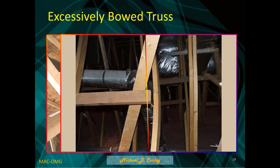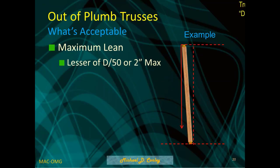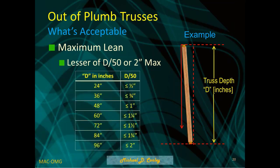Maximum lean is another concern. Trusses lean on occasion because the straps were put in improperly or in an improper location. The rule of thumb is D over 50 or a maximum of two inches out of vertical. D is the depth, which is from the top cord to the bottom cord. If you've got a 36-inch truss in depth, it can't be leaning more than three-quarters of an inch. A six-foot-deep truss can't lean more than an inch and a half. Beyond 96 inches, no truss can lean more than two inches.